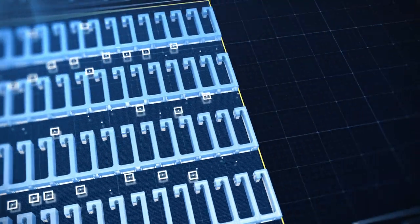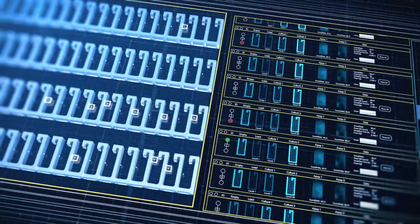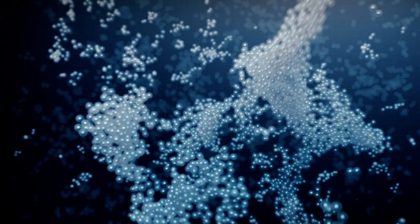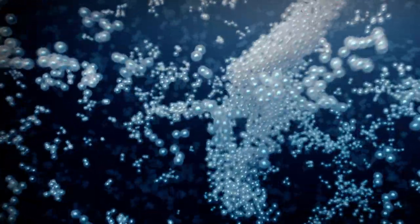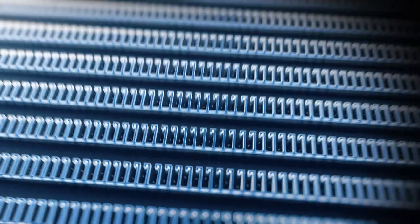Amgen saw the potential right away. We started working with Berkeley Lights to adapt the technology to biotech research. Now, instead of needing tens of thousands of cells to produce one point of data, we can conduct experiments on single cells, with thousands of cells on a single chip.